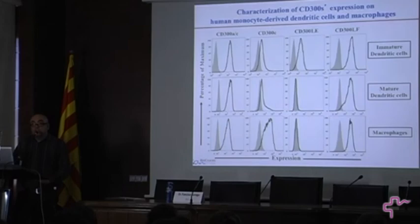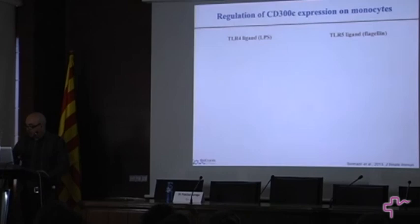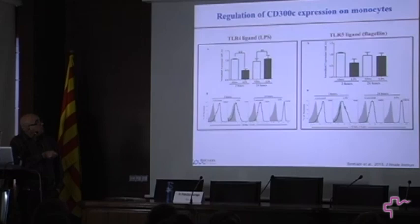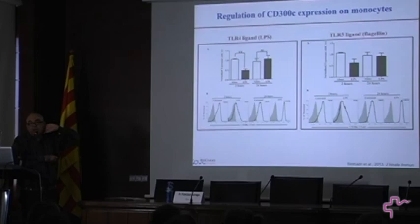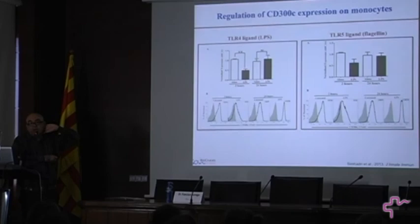We determined to perform more studies with this antibody. We showed that the receptor is rapidly down-regulated after LPS or other TLR ligands like flagellin after two hours. We have preliminary data that this down-regulation is due at least partially to the action of metalloproteases, because if you inhibit metalloproteases you prevent some of that down-regulation. But later on, around 24 hours, the expression of the receptor increases again.